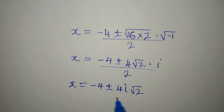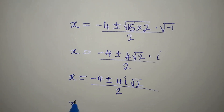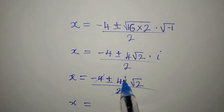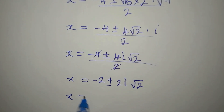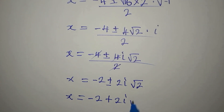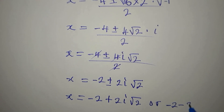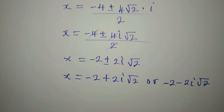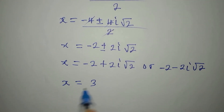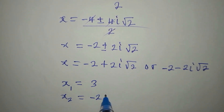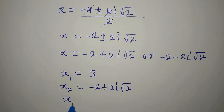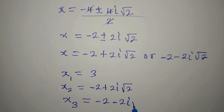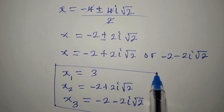Dividing everything by 2: x equals minus 2 plus or minus 2i root 2. So the two complex solutions are: x equals minus 2 plus 2i root 2, or x equals minus 2 minus 2i root 2. Bringing all three solutions together: x₁ equals 3, x₂ equals minus 2 plus 2i root 2, and x₃ equals minus 2 minus 2i root 2. These are the three complete solutions to the equation.